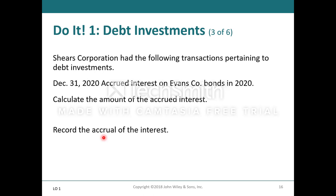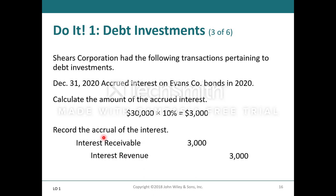On December 31st, 2020, she accrues interest on Evans Company bonds. To calculate the accrued interest: $30,000 times 10% equals $3,000. She would record a debit to interest receivable and a credit to interest revenue for $3,000, recognizing the accrual of the interest as owed.